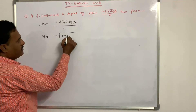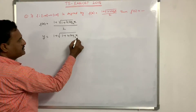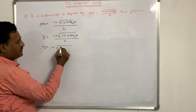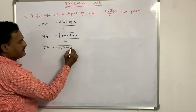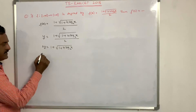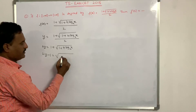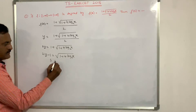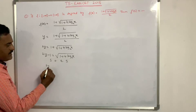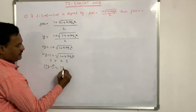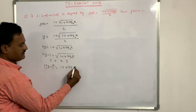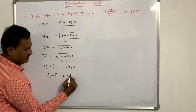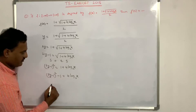So y equals 1 plus under root of 1 plus 4 log x base 2, divided by 2. Therefore 2y equals 1 plus under root of 1 plus 4 log x base 2. Taking 1 to this side: 2y minus 1 equals under root of 1 plus 4 log x base 2. Squaring both sides: (2y minus 1) squared equals 1 plus 4 log x base 2.